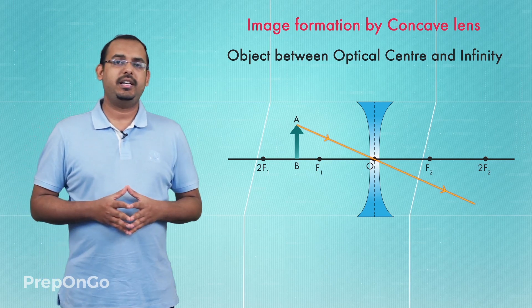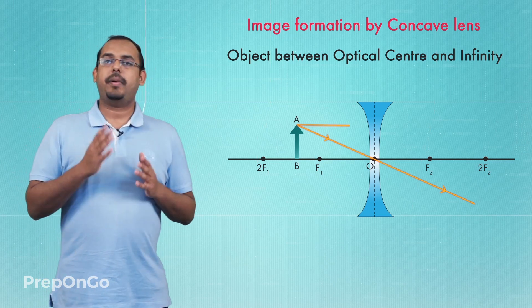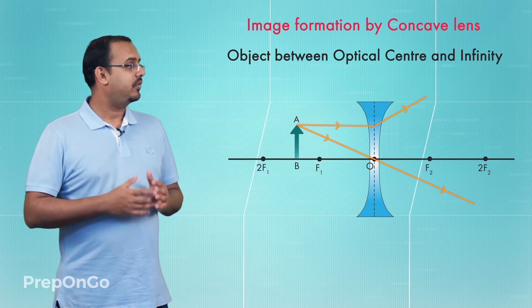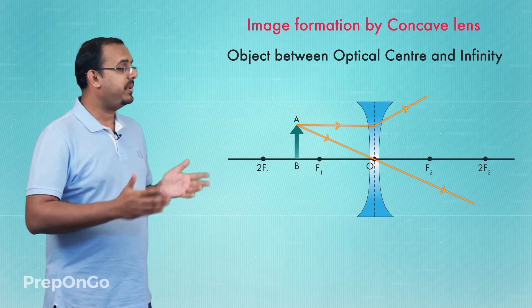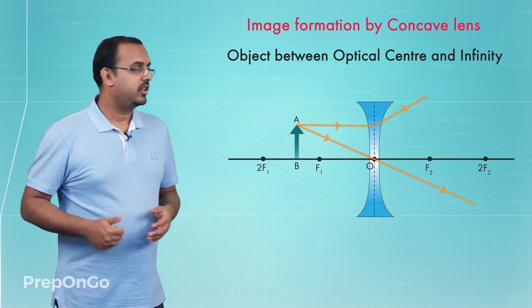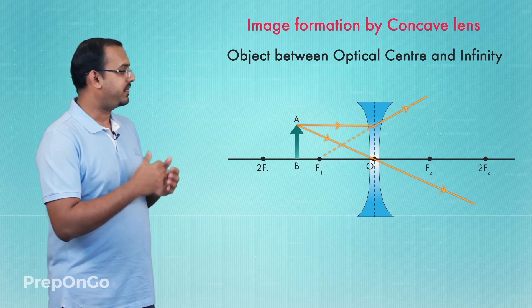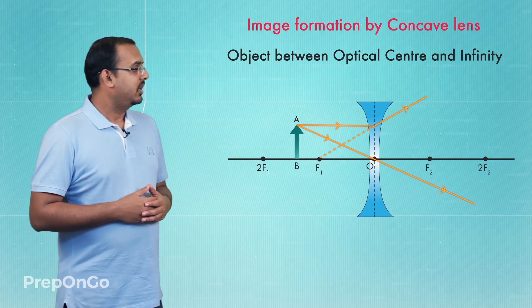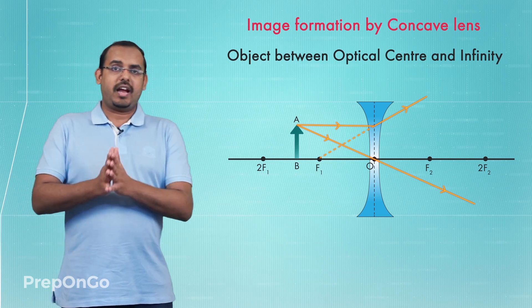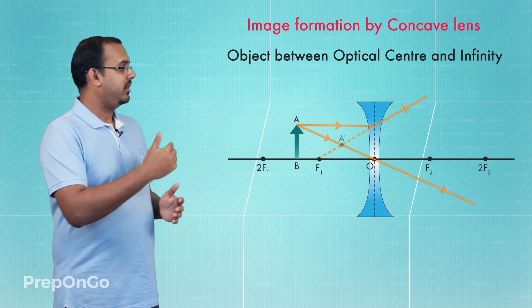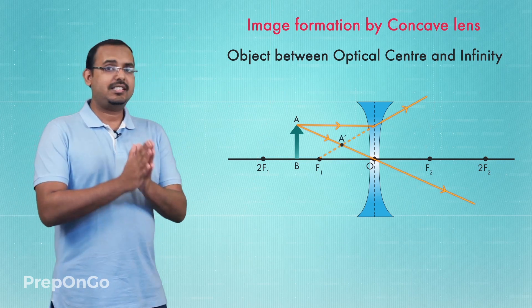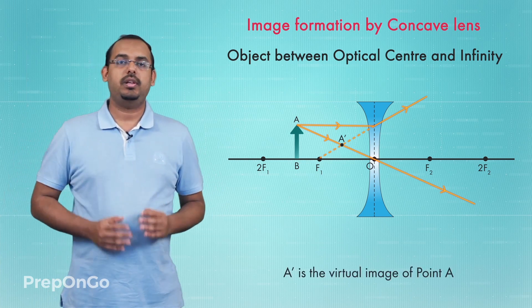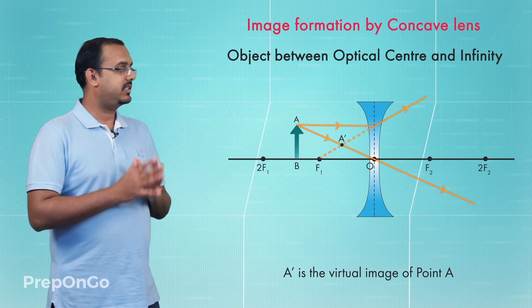The second special ray is a light ray parallel to the principal axis of the concave lens. This ray refracts from the concave lens in such a way that it appears to be coming from the principal focus. Extending the refracted ray backwards, we see it appears to originate from the principal focus. These two refracted rays appear to meet at point A', which forms the virtual image of point A on the object.